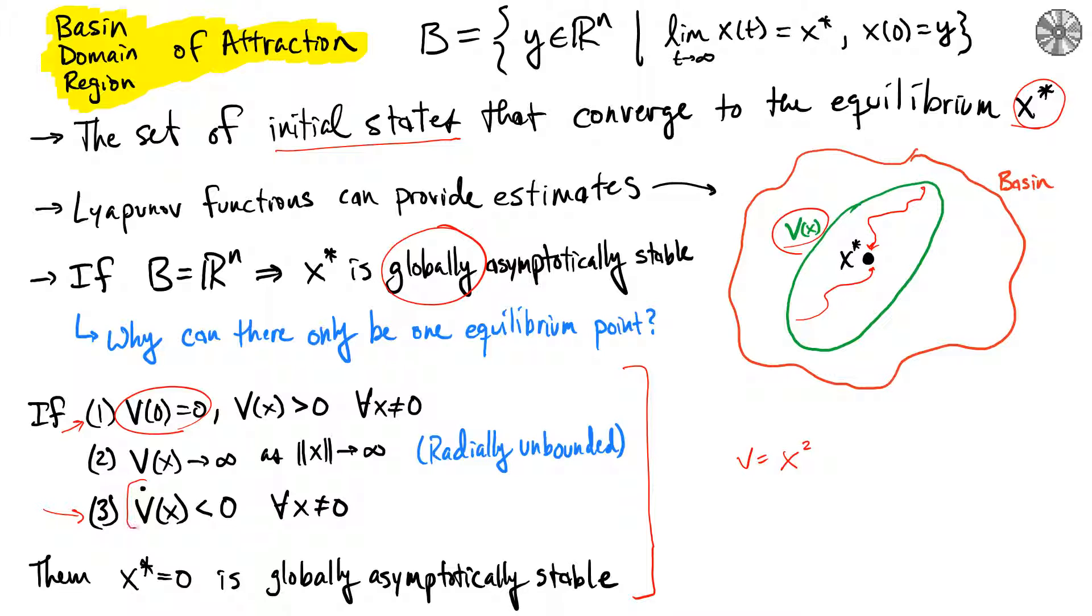your derivative of the function along the system dynamics is always negative, except maybe at your equilibrium. The new thing we're introducing is this notion of the Lyapunov function being radially unbounded, which essentially says